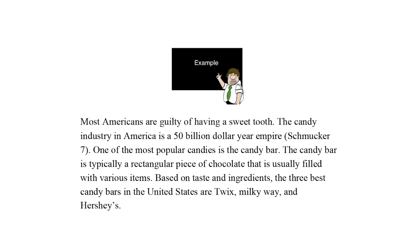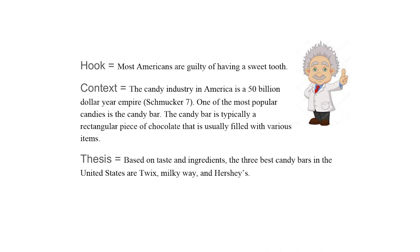That's your context — I explain it and give a little information about what a candy bar is. Then the thesis: 'Based on taste and ingredient, the three best candy bars in the United States are Twix, Milky Way, and Hershey's.' Now my first paragraph is about Twix and its taste and ingredients, the second about Milky Way, and the third about Hershey's. The hook draws in the reader, context explains things, and the thesis gives you the blueprint.